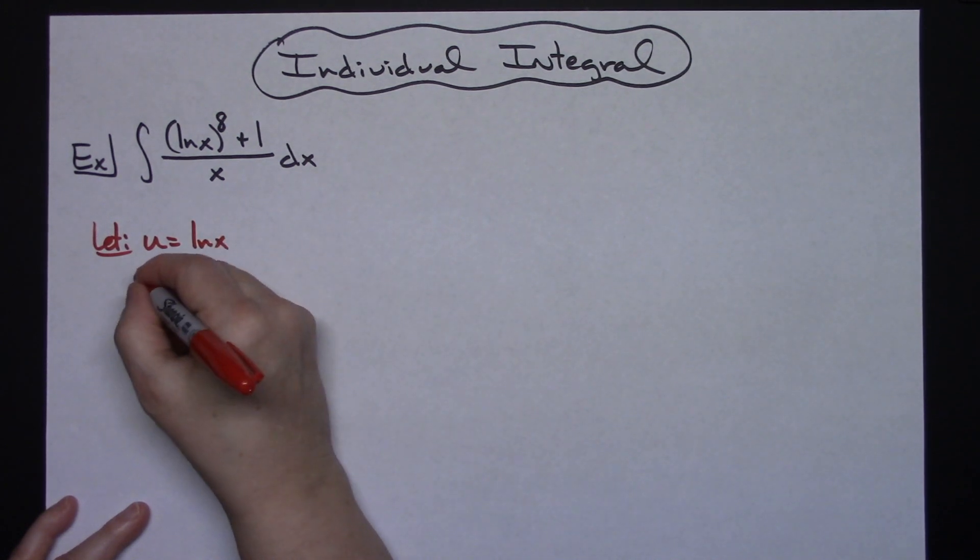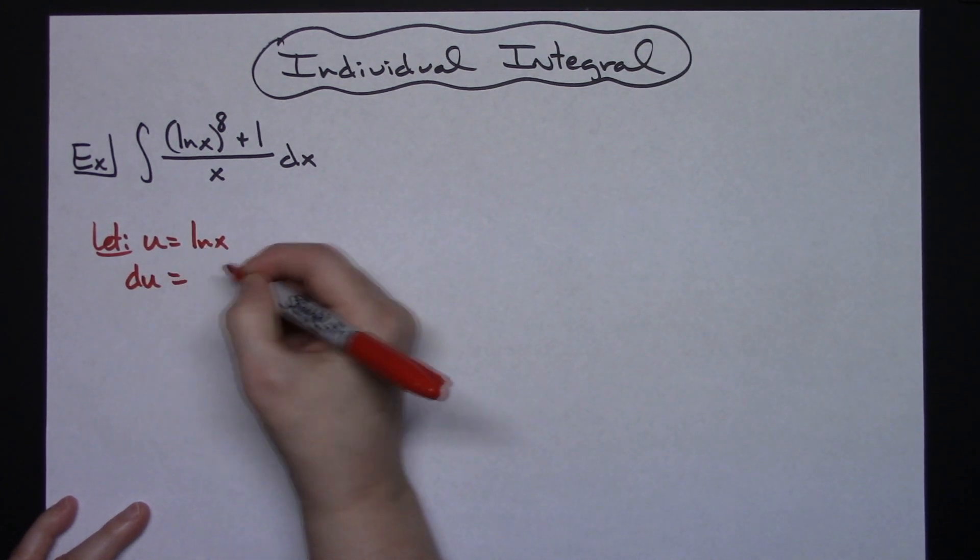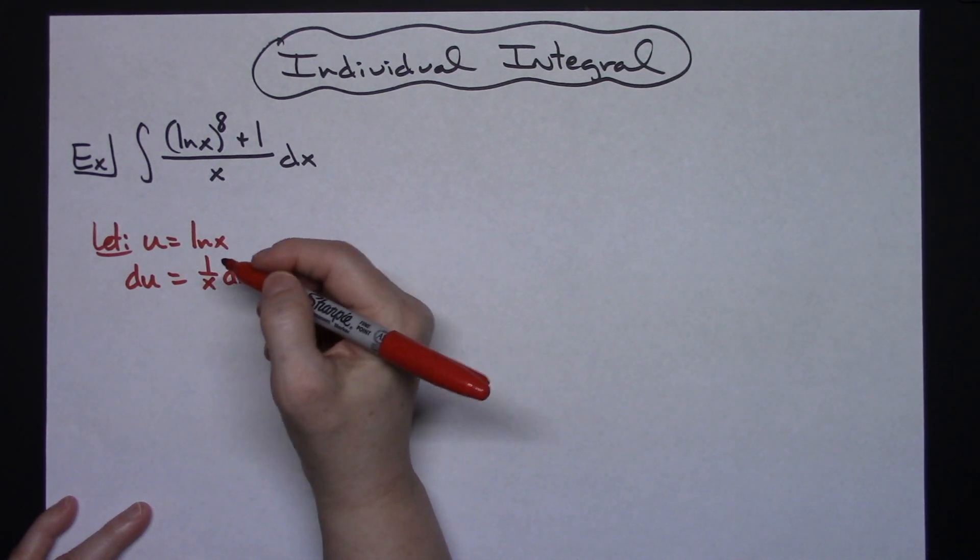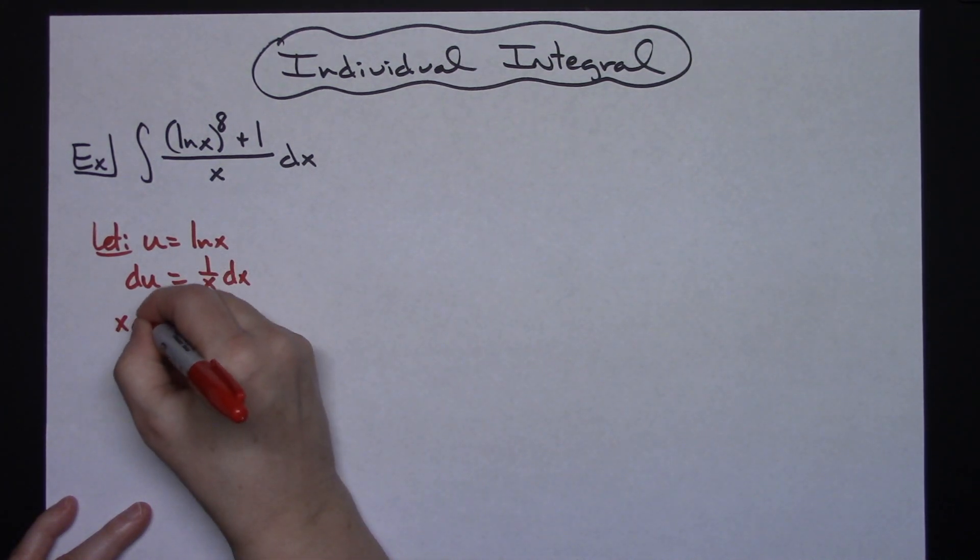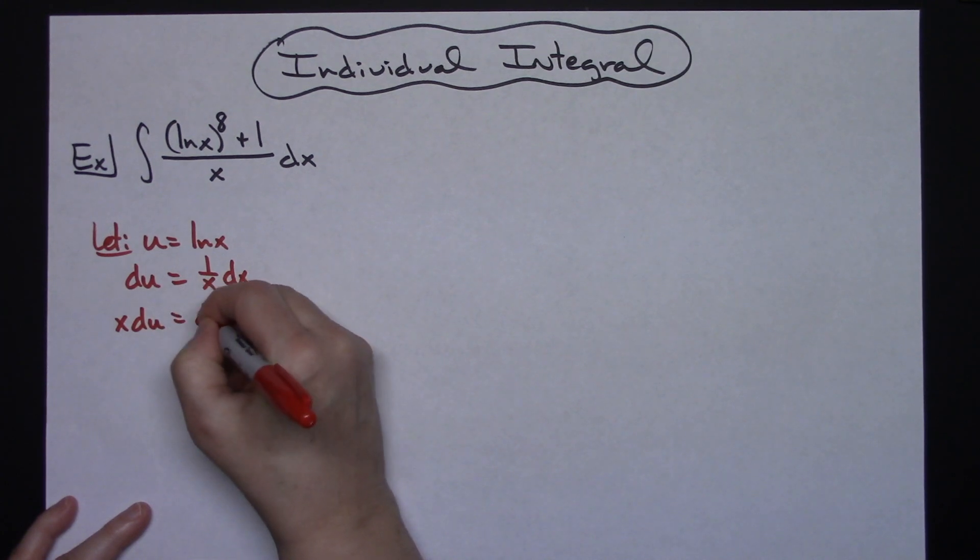Then I'm going to take the derivative of both sides. So I'll have du is equal to, hopefully you have this memorized as 1 over x dx. I'm going to go ahead and solve all the way down for my dx. So multiplying both sides of the equation by that x, I'll have x du is equal to dx.